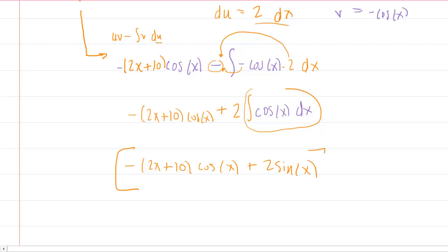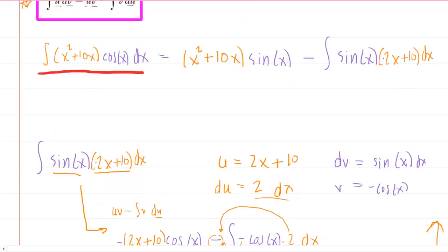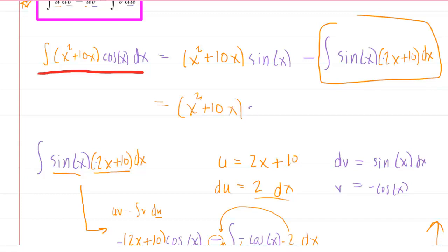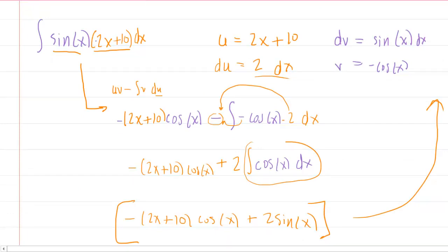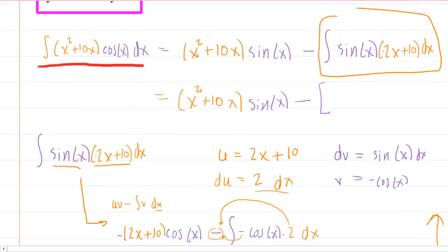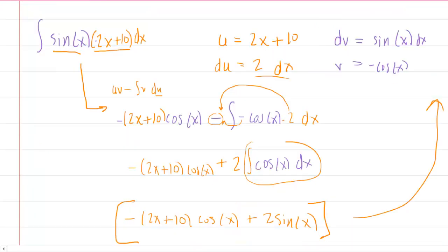Now remember, this expression right here was the integral that we were trying to evaluate all the way back at the top. It was this one right here. So for our final answer, we're going to have x² + 10x multiplied by our sine of x, and then minus that integral that we just figured out, and that was negative 2x + 10 cosine of x.